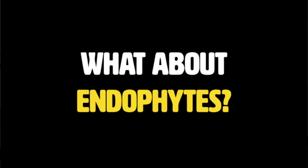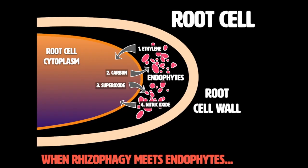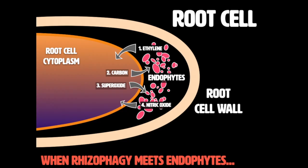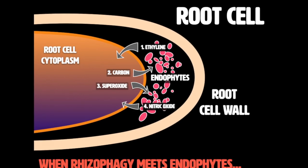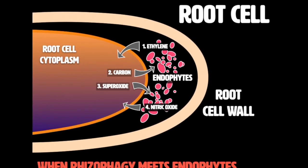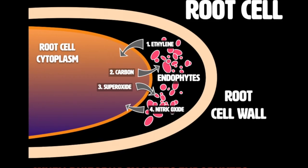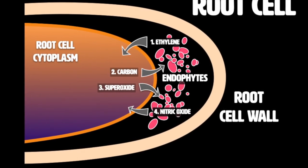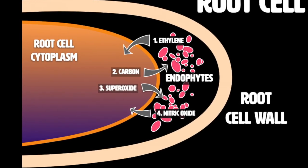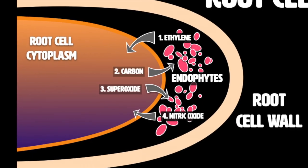Some of them are endophytes. When rhizophagy interacts with endophytes, something interesting happens: they're releasing ethylene and the plants are sending carbon in response, feeding these microbes, but also bombarding them with superoxide just like all other microbes. So these microbes must be able to provide nitric oxide — which they create through nitrogen fixation. This is why nitrogen fixers are endophytes: because they die if they weren't able to produce nitric oxide to counteract the superoxide.